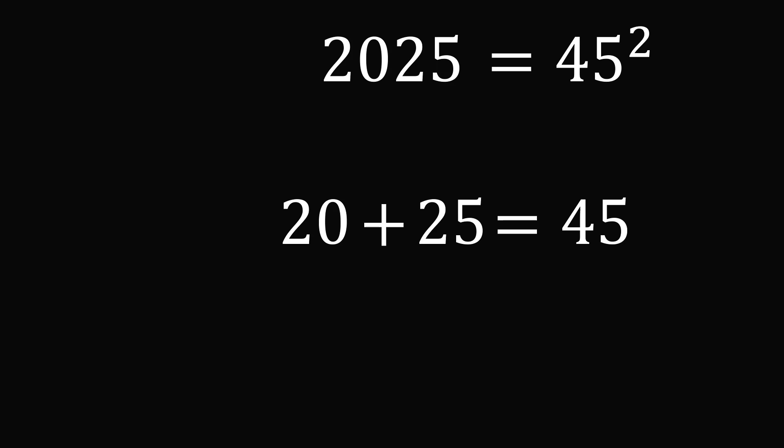This is truly a remarkable fact. Now there are other numbers with this property. Let's take the number 81. If we split it down the middle, we get the two numbers 8 and 1. 8 plus 1 is equal to 9, and 9 squared is equal to 81.